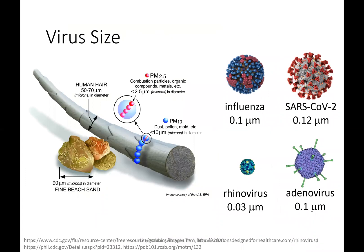Understanding the size of the virus, or more importantly the droplets that carry it, is critical for understanding how those viruses are transported through the air. To orient ourselves, we have a picture on the left-hand side of fine beach sand, which is about 90 micrometers in diameter, and then a human hair, which is 50 to 70 micrometers in diameter.